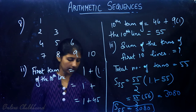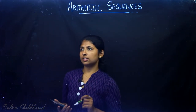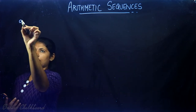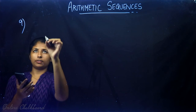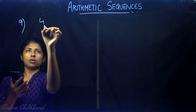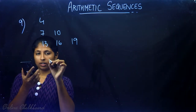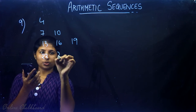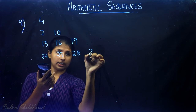This completes question number 8. We now move on to the last question of the section, question number 9, which is a similar question with different numbers: 4, 7, 10, 13, 16, 19, 22, 25, 28, 31.